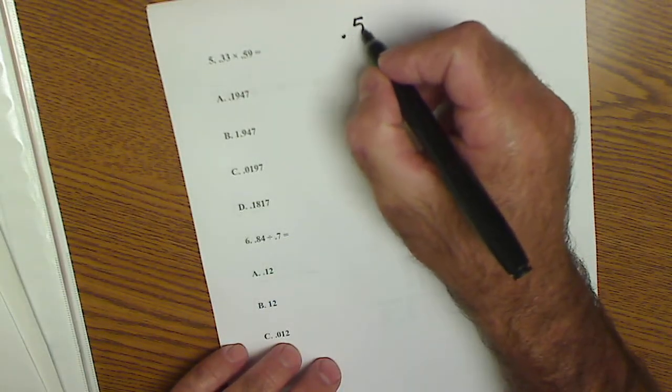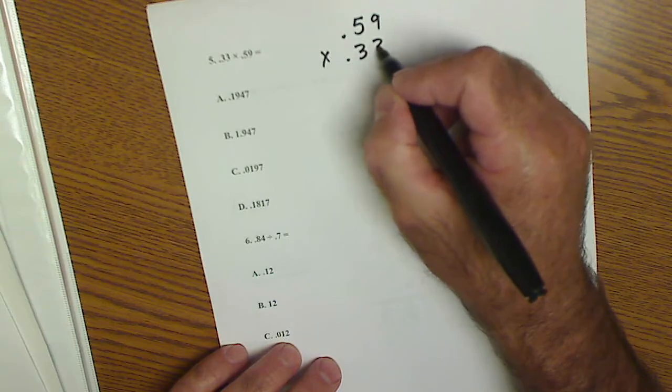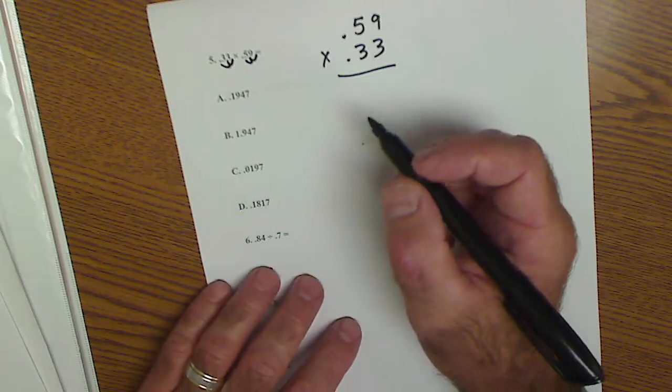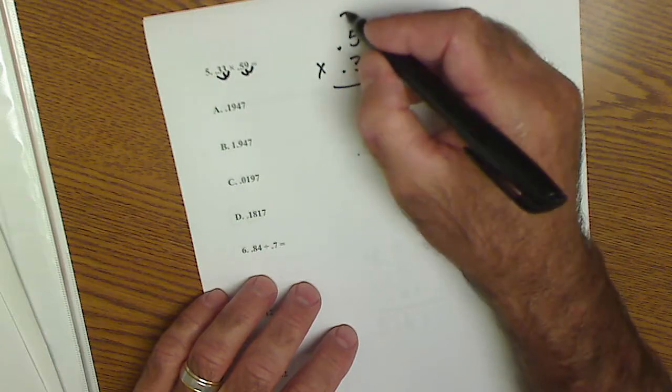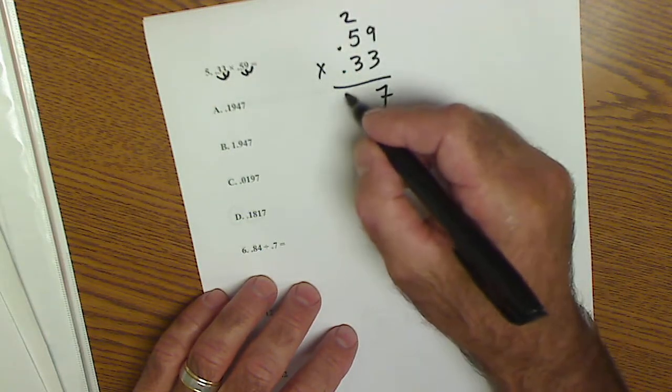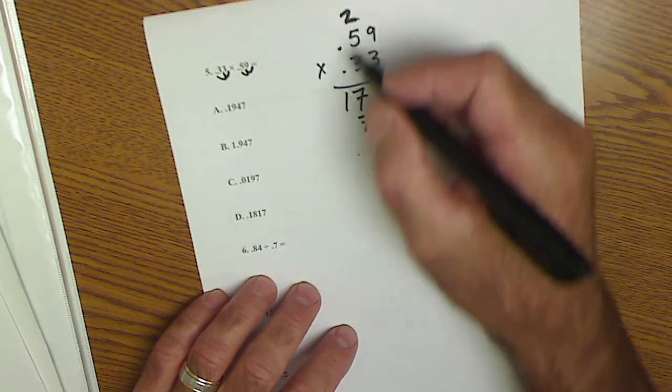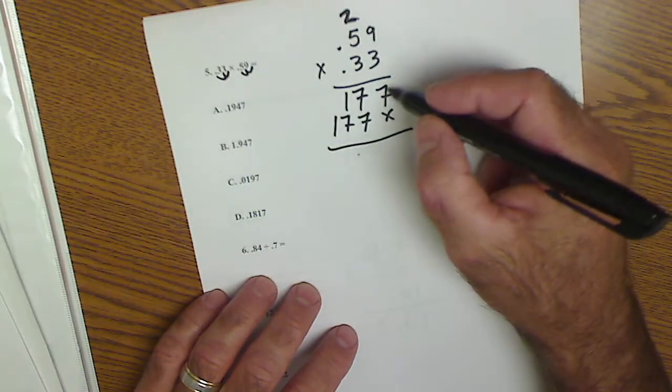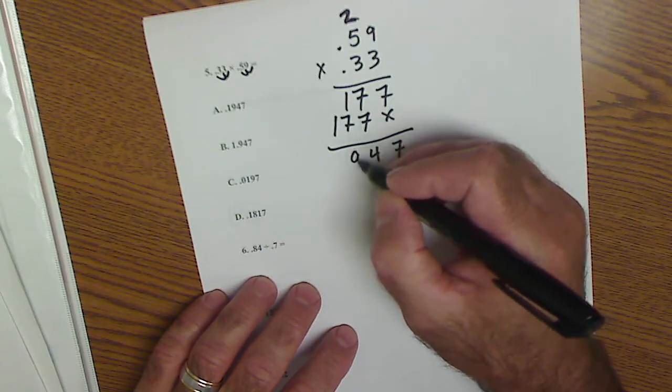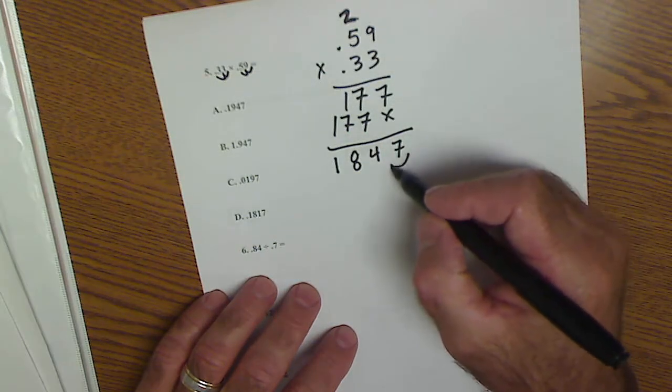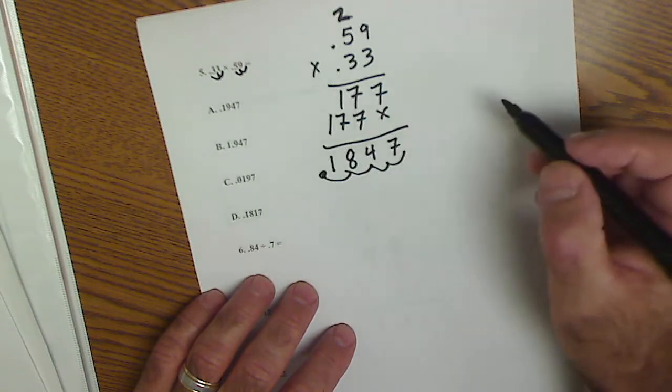Next page, multiplying decimals. I have 0.59 times 0.33. I'm over 1, 2 places, 3, 4, so my answer is going to be 4 places over. 3 times 9 is 27, carry the 2. 15 plus 2 is 17. Placeholder here. 3 times 9 is 27, 2 again, 15, 17. Add those numbers together: 7, 14, 8, and 1. Remembering I have 1, 2, 3, 4, I'm over 1, 2, 3, 4. So I'm 0.1847.